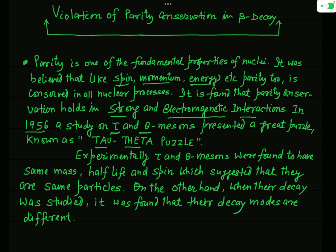In experiments it was seen that the tau meson and theta meson have the same mass, same half-life, and same spin. Since these two particles have identical properties, it was suggested they are not different particles but simply the same particle. However, when the decay processes of the tau-plus meson and theta-plus meson were studied, it was observed that their decay modes are not identical — they suffer different decay modes.